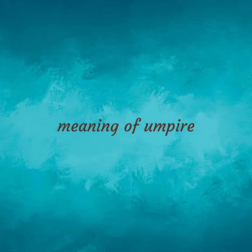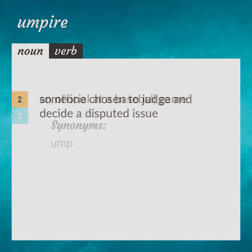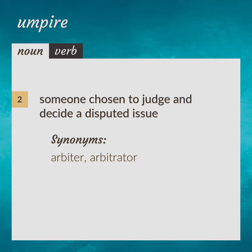Meaning of umpire. An official at a baseball game. Someone chosen to judge and decide a disputed issue. An umpire was appointed to settle the tax case. Arbiter, arbitrator.